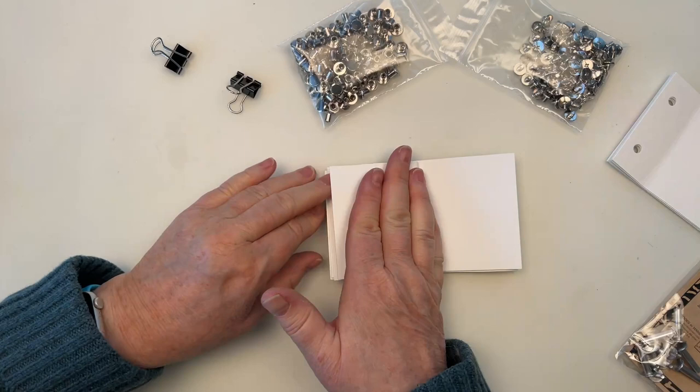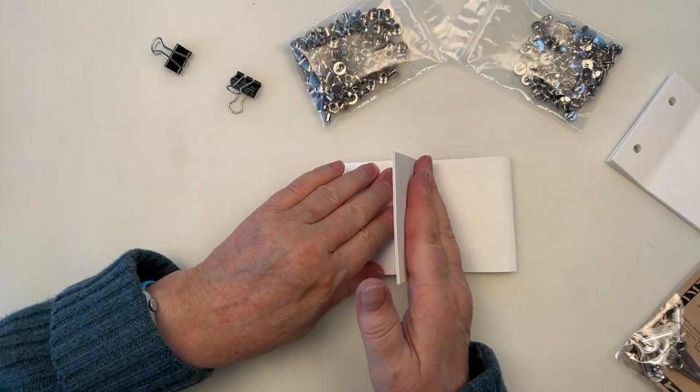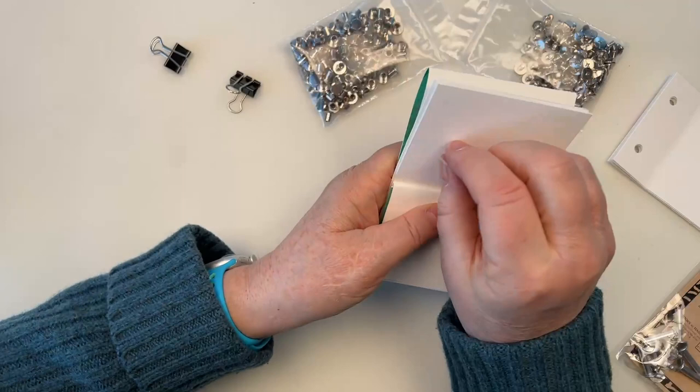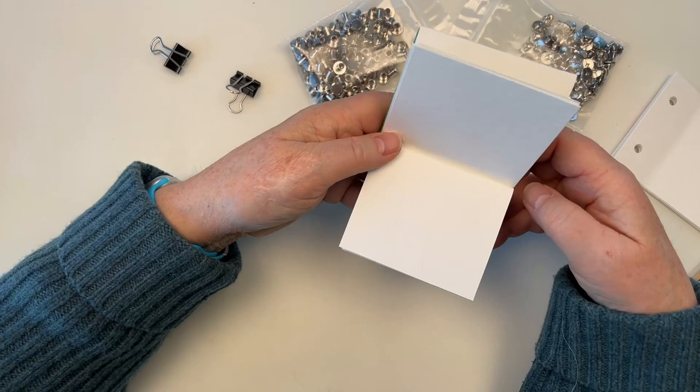But you can also just standardize and say I'm going to make a book with 24 pages and buy screw posts for that length. If you're working with larger pages, you might choose to use three or four screw posts, and if you're making kind of a special book, maybe from a trip, you might choose to make a more conventional cover instead of this matchbook fold.